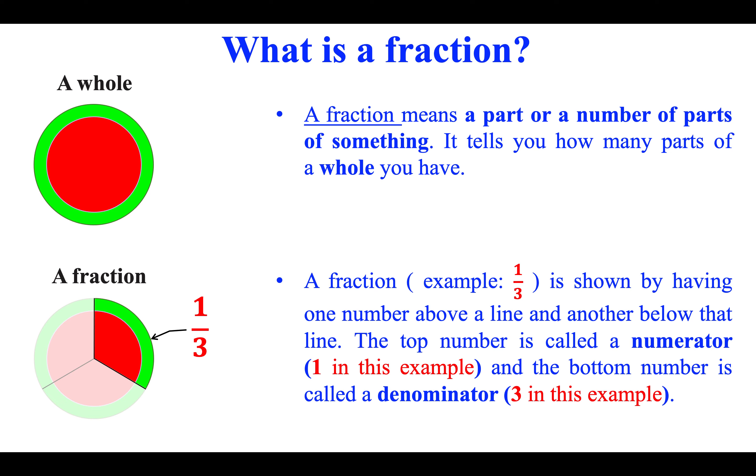A fraction, example 1 slash 3, is shown by having one number above a line and the other below that line. The top number is called a numerator, 1 in this example, and the bottom number is called a denominator, 3 in this example.